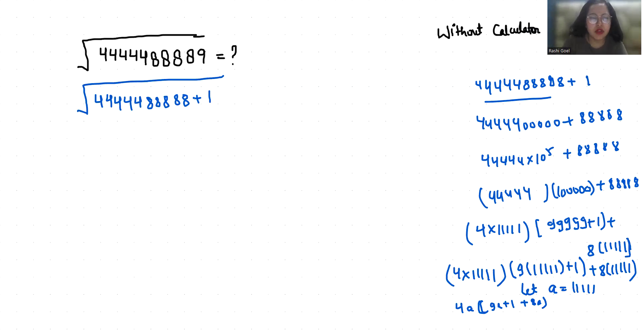So I can replace this with 4a times 9a plus 1 plus 8a, and this plus 1. So it becomes 4 times 9 is 36a squared plus 4a plus 8a plus 1.